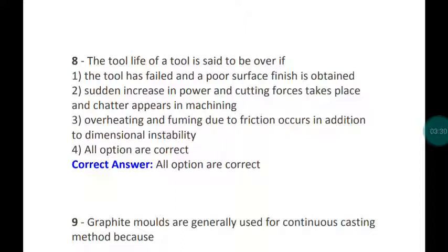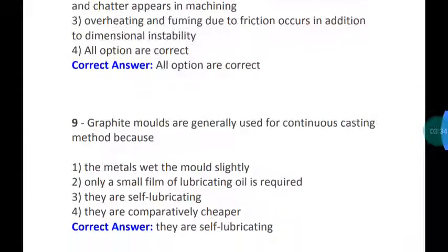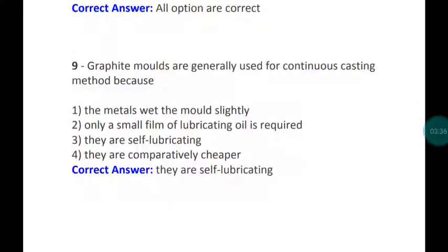Question number nine: Graphite molds are generally used for continuous casting method because they are self-lubricating. So no need to provide the external lubrication for that. That's why graphite molds are generally used for continuous casting method.